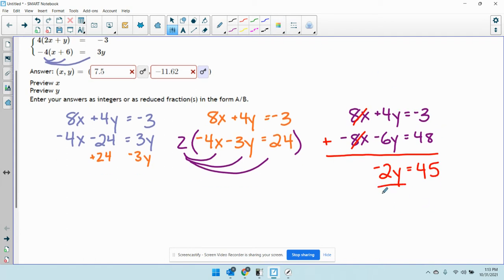Solving for y, I'm going to divide both sides by negative 2. So you might be compelled to write this as a decimal, but notice here it says enter your answers as integers or as reduced fractions. So they don't want us to write this as 22.5. So what we're going to do is just leave it as negative 45